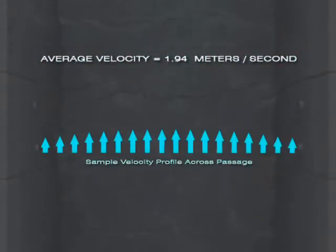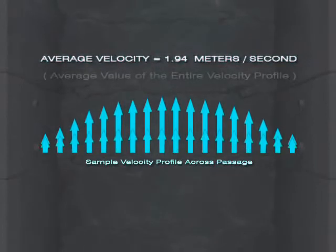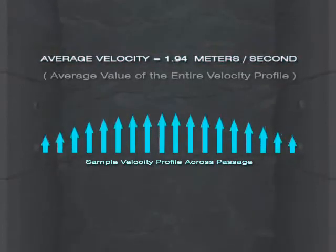The resulting flow velocity is the average value of the non-uniform velocity profile across the passage.